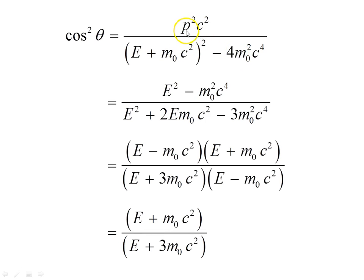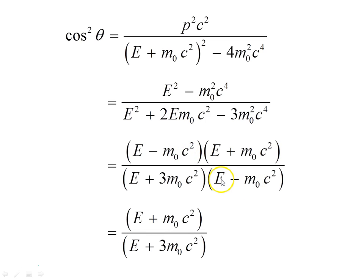We can isolate cos²θ, and then use the energy-momentum invariant to substitute, replacing p² with E²/c² − m₀²c². This was the important relationship established earlier. Factorizing the numerator using difference of perfect squares and factorizing the denominator, some terms cancel, leaving us with cos²θ as a ratio of expressions in E and m₀c².